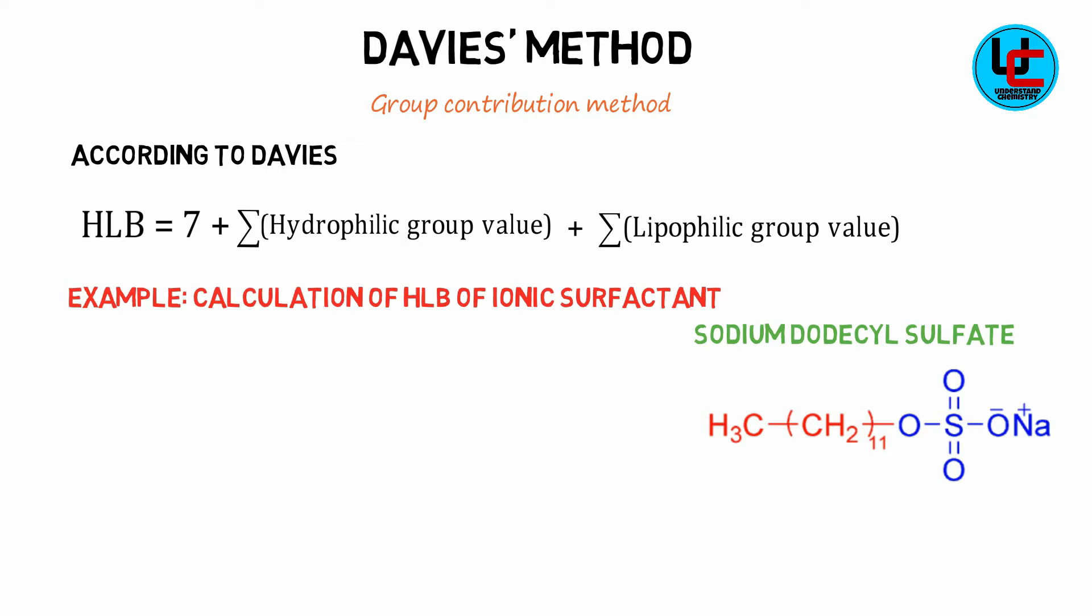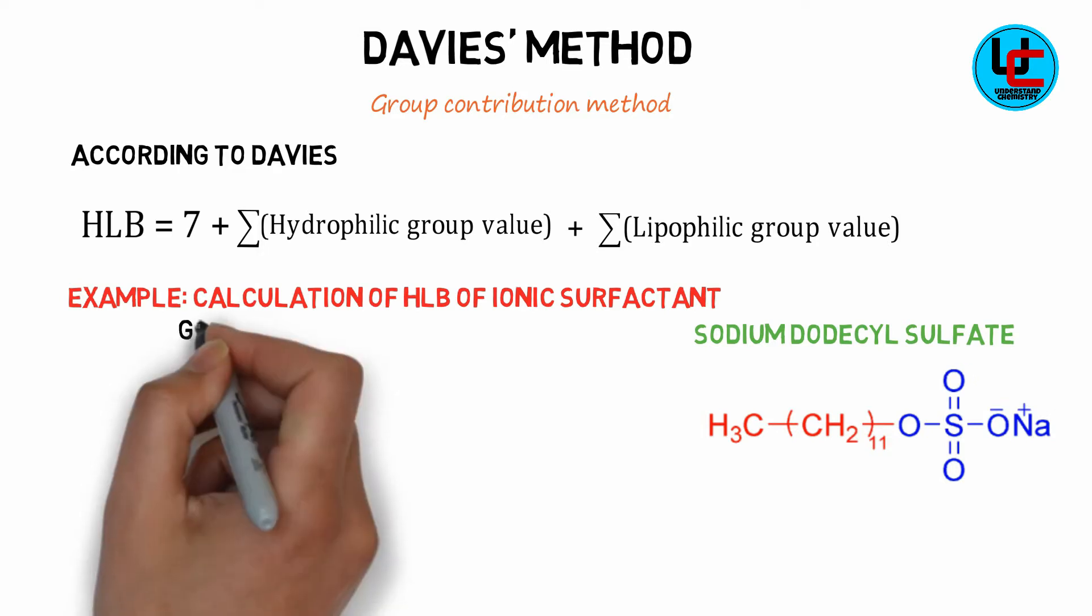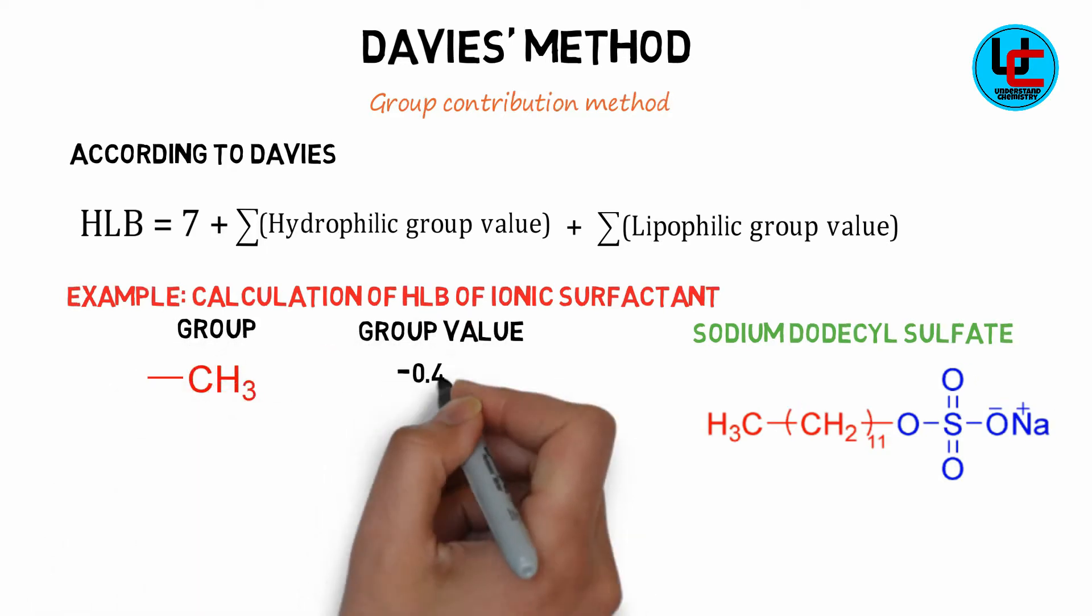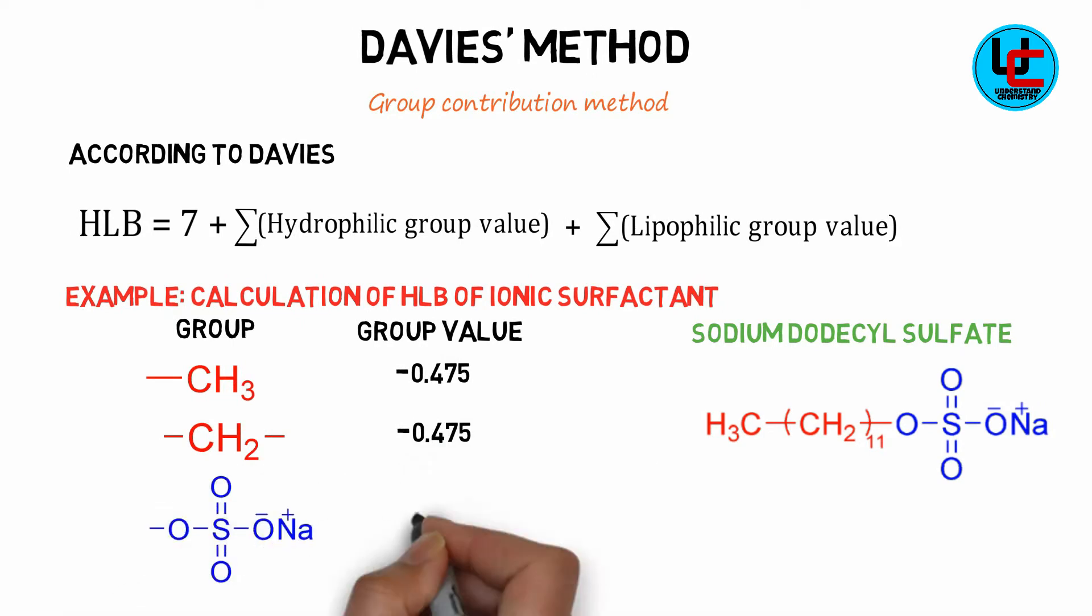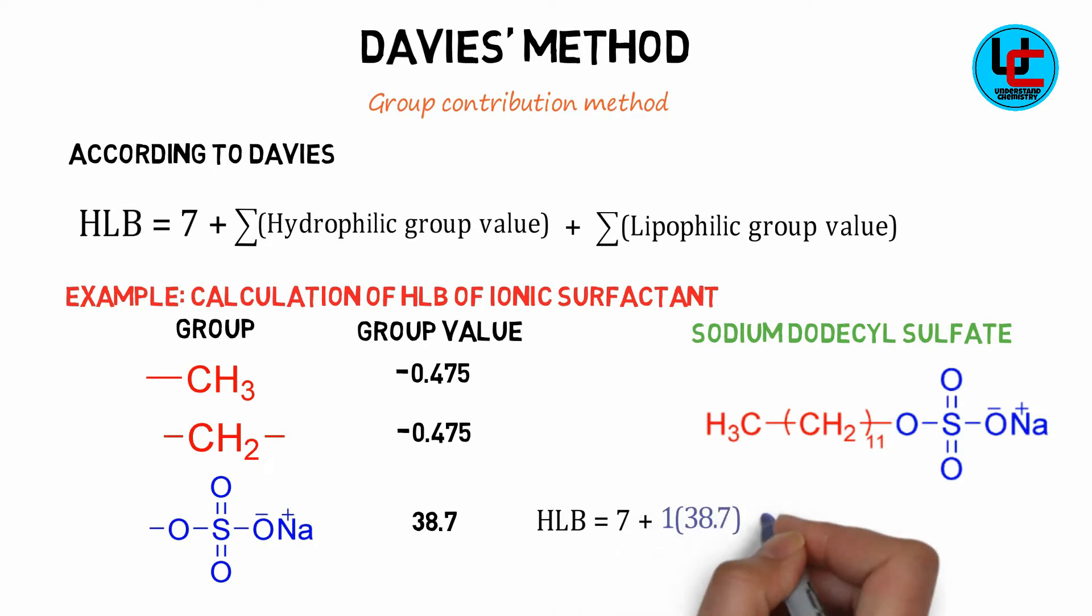This molecule consists of 1 methyl, 11 methylene, and a sodium sulfate group. The values of these groups are shown here. By placing these values to Davies formula, we obtain HLB of sodium dodecyl sulfate equal to 40.